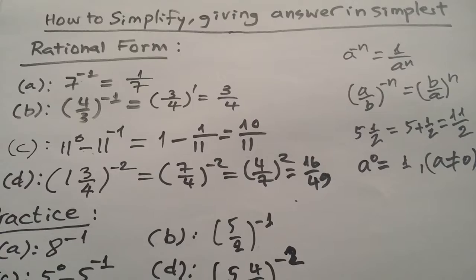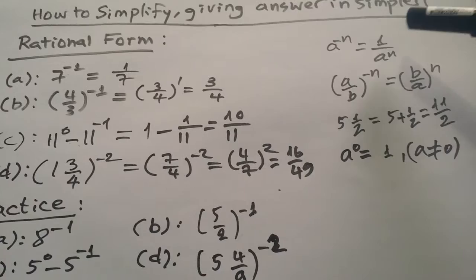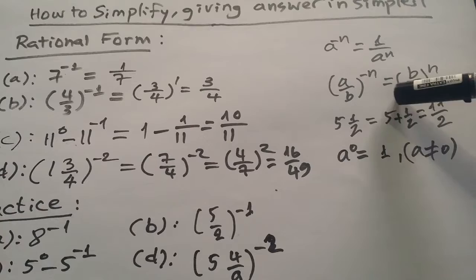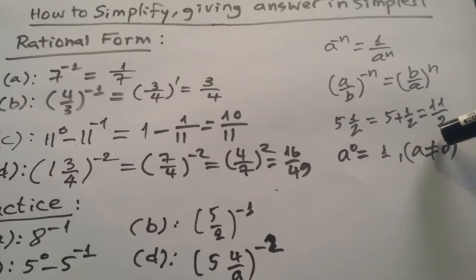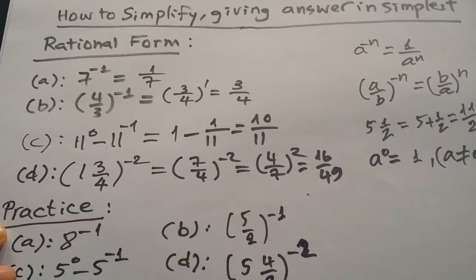When doing the exercises, remember all the formulas: a to the power minus n equals 1 divided by a^n; a divided by b to the power minus n equals b divided by a to the power n; mixed number 5 and 1 over 2 equals 5 plus 1 divided by 2, which equals 11 divided by 2; and a to the power 0 equals 1, where a is different from 0.